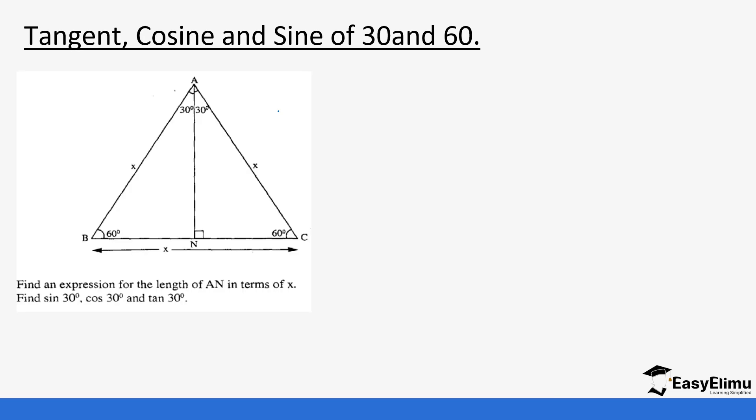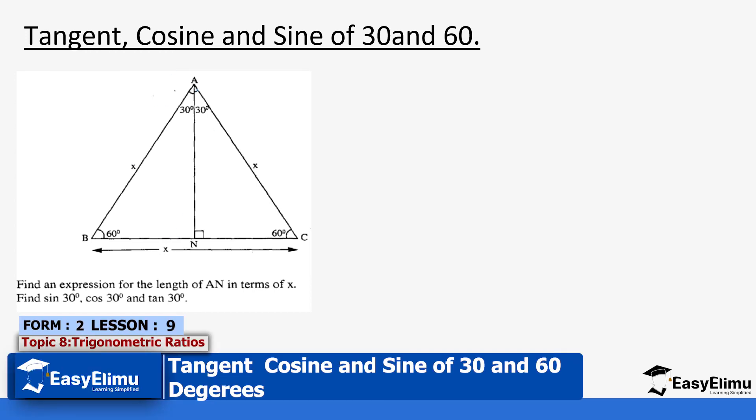When we were looking at the tangent, cosine and sine of 45 degrees, we used a right angle triangle that has been derived from an isosceles triangle. For today we are going to be using an equilateral triangle. An equilateral triangle has equal sides as you can see from the diagram. When we drop a perpendicular bisector from point A,